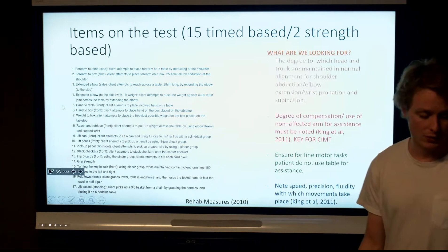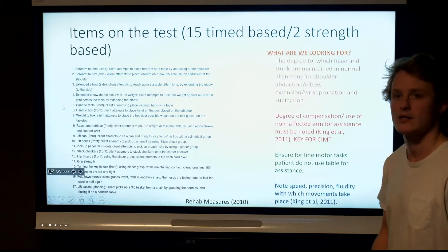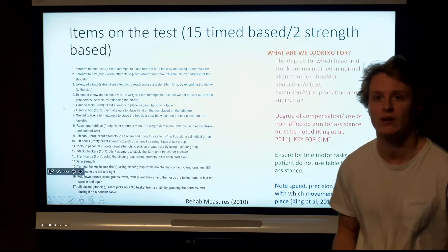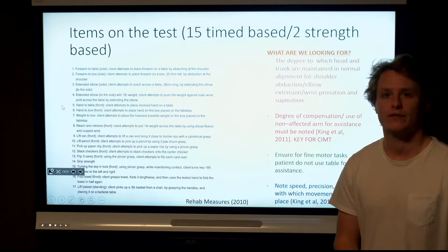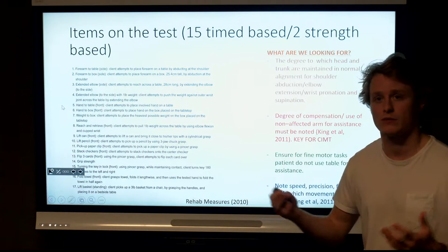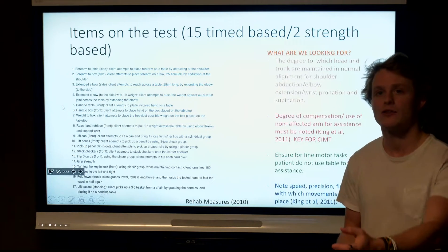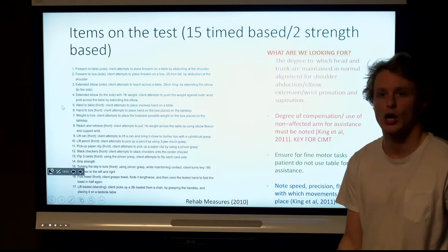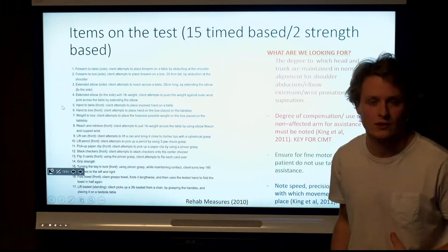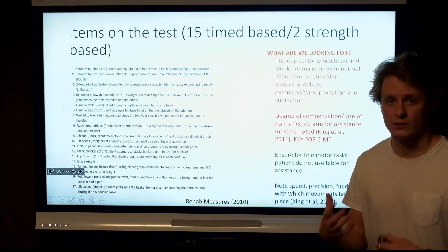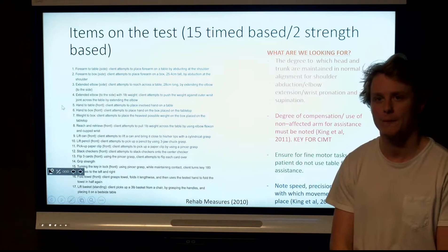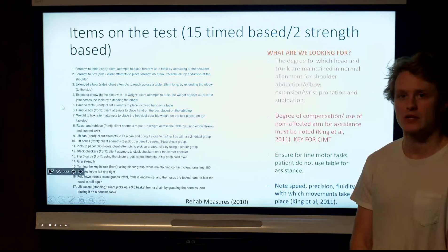What is important to notice is what we focus on during this examination. We're looking for the degree to which the head and trunk are maintained in normal alignment for shoulder extension, abduction, flexion, wrist pronation and supination, all of the tasks that we're assessing. We want to look at the degree to which our clients, for instance the can drinking which I will show you, don't use the full extent of their affected arm and will compensate with the head and trunk. This is what we want to assess for, because this is what constraint-induced movement therapy is trying to work against. We also want to see the degree to which the non-affected arm is used to compensate for the affected limb.